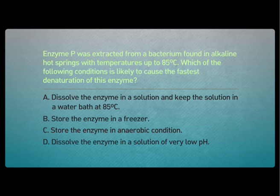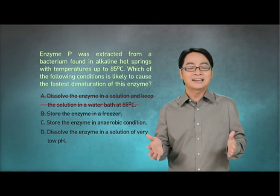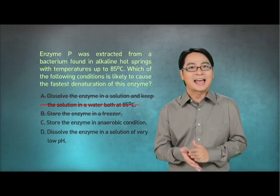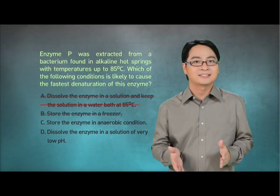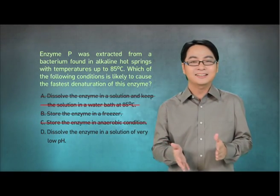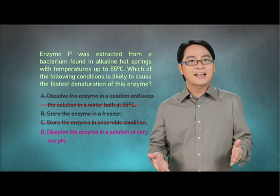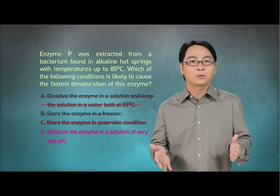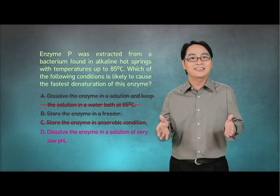The keywords in this question are alkaline condition and 85 degrees Celsius. A is incorrect. B is also incorrect, as the enzymes are inactive but not denatured at a low temperature. Denaturation of enzymes is not affected by oxygen content, hence C is incorrect. A solution with low pH is acidic. This enzyme works best in alkaline conditions and will be denatured in acidic conditions. So the right answer is D.